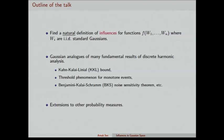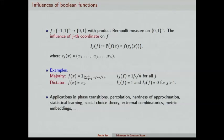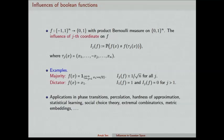The first few slides will review the fundamental results in the discrete spaces. You have seen this definition of the influences of Boolean functions probably n times in this conference — I'll state it n plus one time. So you have a function defined on the hypercube, Boolean valued, and the hypercube is equipped with the uniform measure or the product biased measure. You define the j-th influence of the function by the following probability: you flip the j-th coordinate, compare the value with f(x), and if they are different you put 1, otherwise 0, and you take the expectation with respect to x.